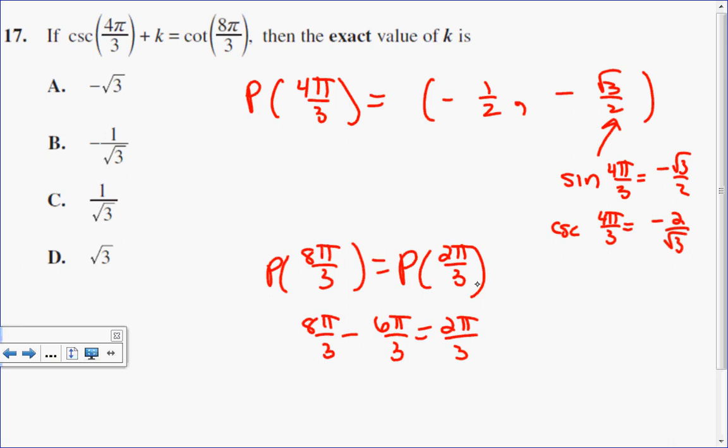So 8π over 3 is the same as 2π over 3. That is a quadrant 2 angle with a reference angle of 60 degrees or π over 3. In quadrant 2, x is negative, y is positive, and it has the coordinates of negative 1 half and positive root 3 over 2.